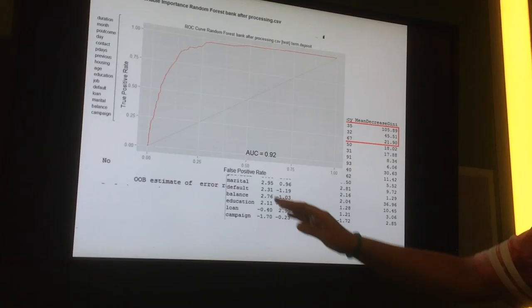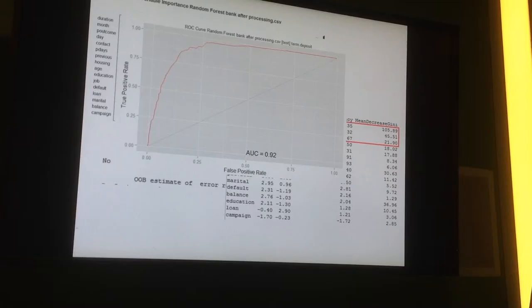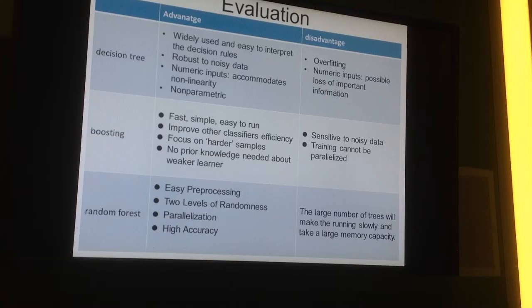And the AUC is 92%, which is higher than both the decision tree and the boosting. So after that, we got an evaluation of those three classifiers.